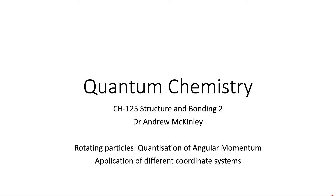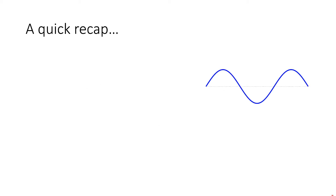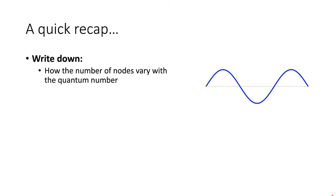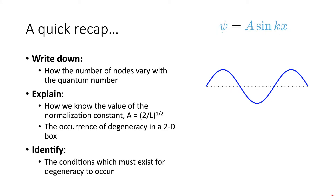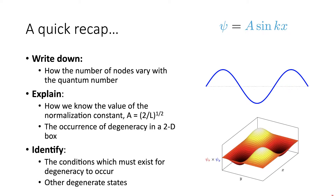In this session we're going to move on from our studies of the particle in boxes to think about what happens when particles start to rotate. By way of a quick recap, write down what happens to the number of modes as we increase the quantum number for the particle in a box. Make sure you can explain the normalization constant, and the occurrence of degeneracy in the 2D box, with particular emphasis on the conditions which have to exist for degeneracy to occur. It's also worth giving some thought to what other degenerate states might exist.